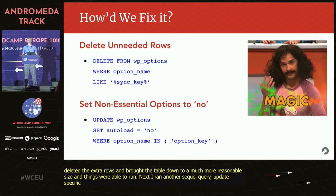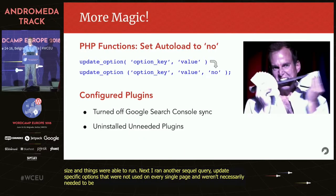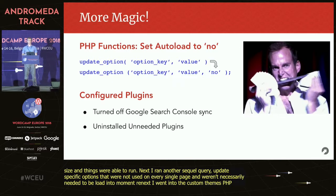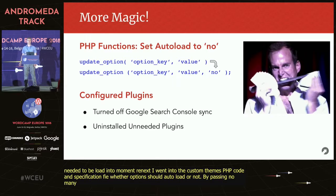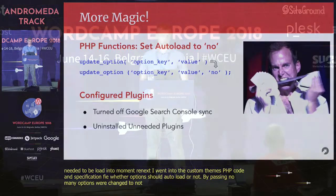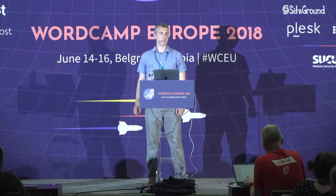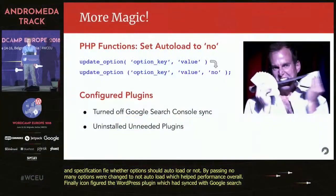These were options that weren't used on every single page and weren't necessarily needed to be loaded into memory. Next, I went into the custom theme's PHP code and specified whether or not options should autoload. By passing no, many options were changed to not autoload, which helped performance overall. Finally, I configured the WordPress plugin that had synced with Google Search Console and turned that functionality off, since it turned out it wasn't really needed.